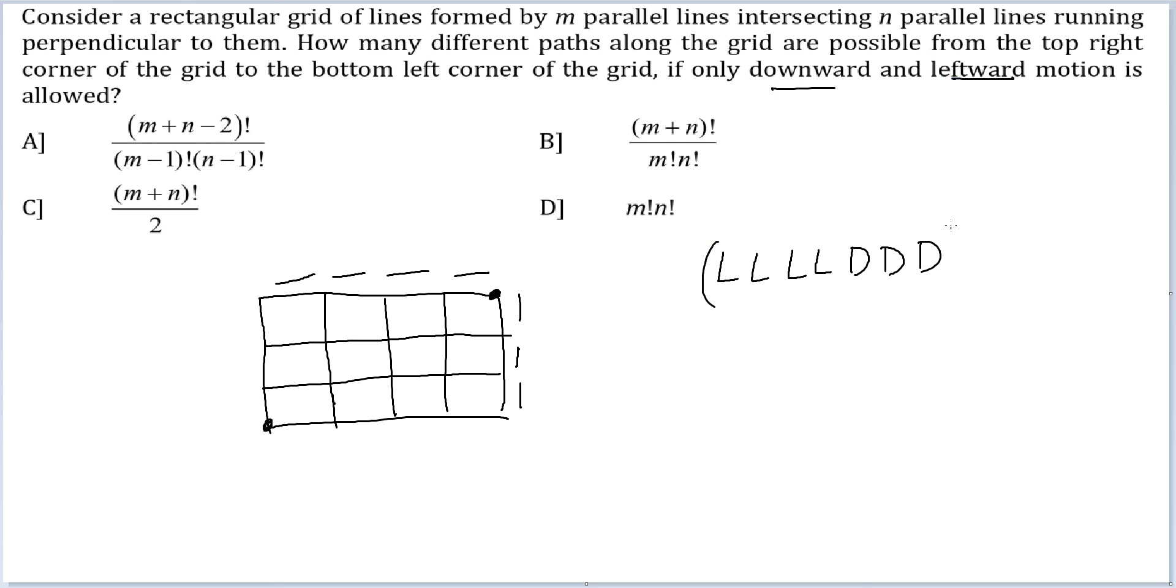So in how many ways can you make a word out of these letters? It will be 7 factorial by how much? 3 factorial, 4 factorial or what is popularly known as 7C3.